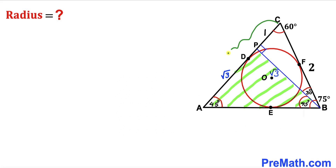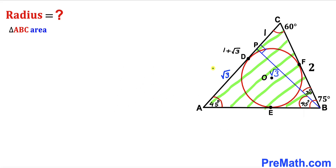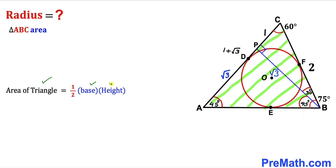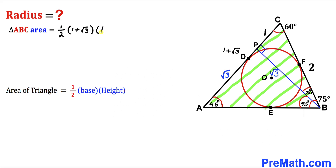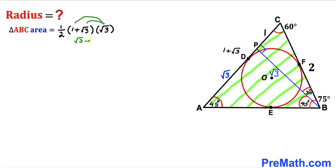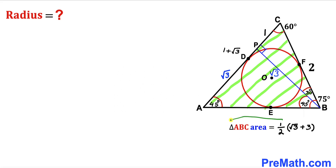Therefore the whole side length AC = AP + PC = √3 + 1. Now let's calculate the area of triangle ABC. Area = ½ × base × height. Here, base AC = 1 + √3 and height BP = √3. So area = ½ × (1 + √3) × √3. Distributing: √3 × 1 = √3 and √3 × √3 = 3, giving area = ½(√3 + 3).